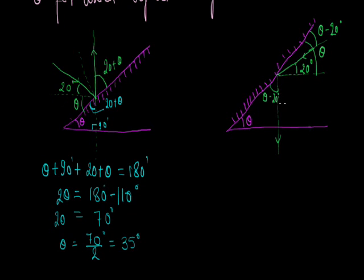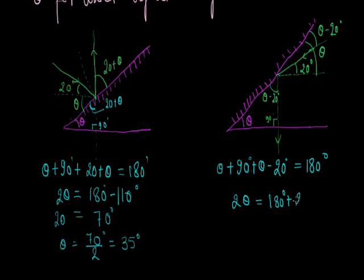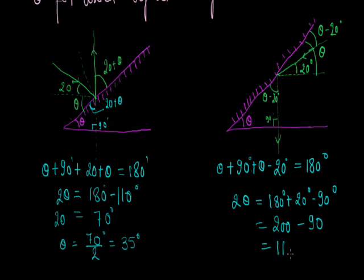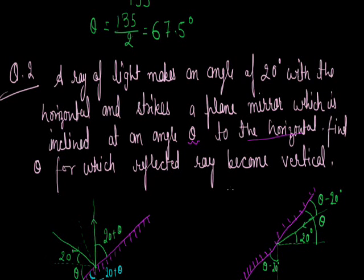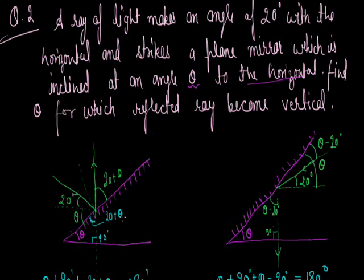Again, considering the triangle, the sum of angles must be 180 degrees: theta plus 90 plus (theta minus 20) equals 180 degrees. So 2 theta equals 180 minus 90 plus 20, which equals 110 degrees, giving theta equals 55 degrees.